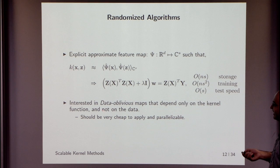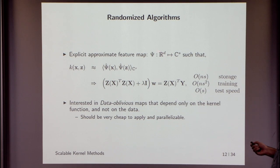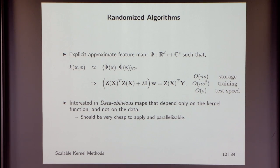We are interested in data-oblivious feature maps that depend only on the kernel, not the actual data. This keeps the operation very cheap, and since it's independent of the data you can apply this function completely in parallel.